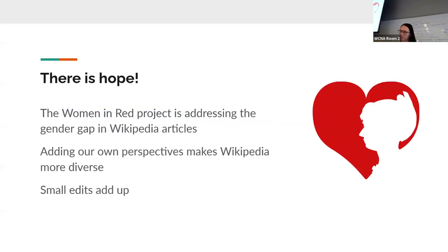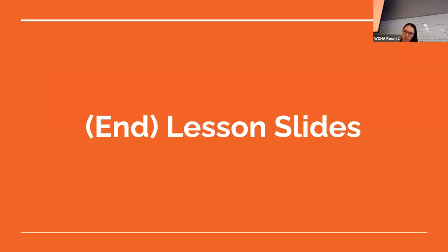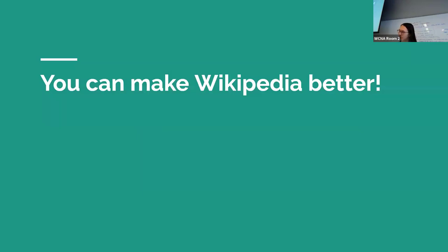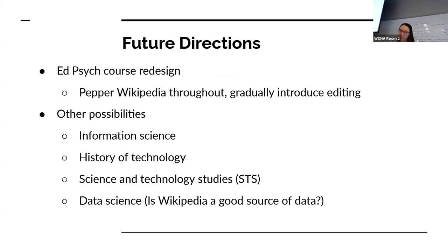I talked about some cool initiatives in Wikipedia to try and make it better, like Women in Red and WikiProject Indigenous Peoples of North America. I wanted to hopefully inspire students to try editing Wikipedia, but it was a big challenge because students had a really hard time getting started regardless of whether they were able to edit or not — they were just like, what should I be doing? If I had to do it again, I would modify the curriculum to sprinkle Wikipedia throughout the course, easing students into editing so they would be much better prepared.